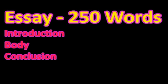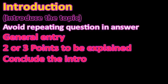Now let us see how to write an essay. There are different methods to write an essay, but it should be at least 250 words and have three parts minimum: introduction, body, and conclusion. The body can have two or three paragraphs. The easiest method for the introduction is a general entry to the topic. You can start with a story or a quotation depending on your knowledge. Then mention two or three points to be explained in the body, and then conclude the introduction part.